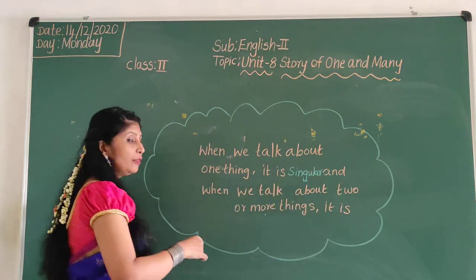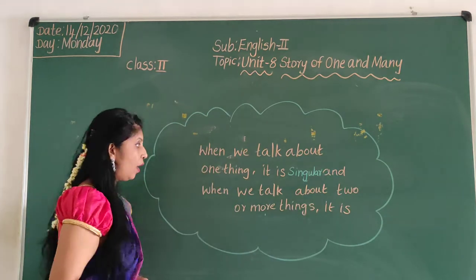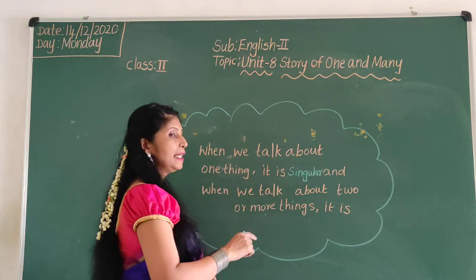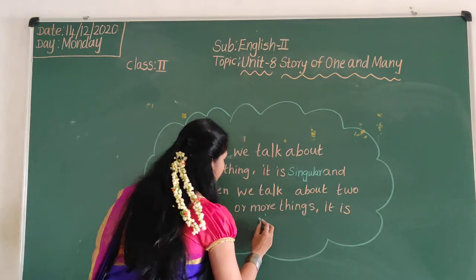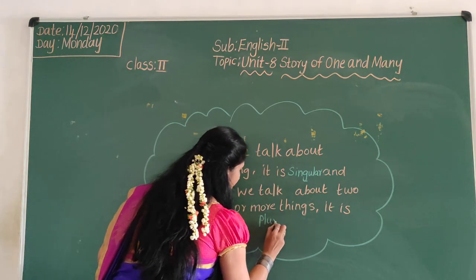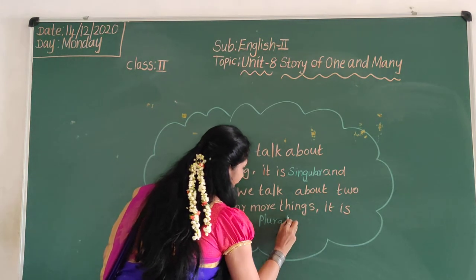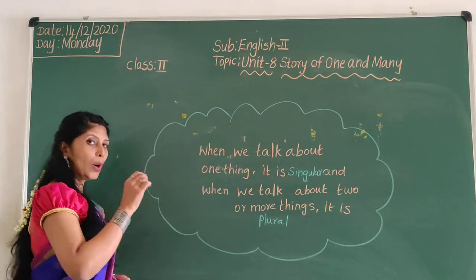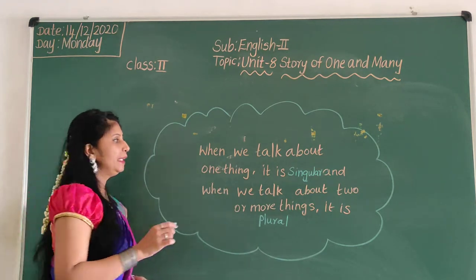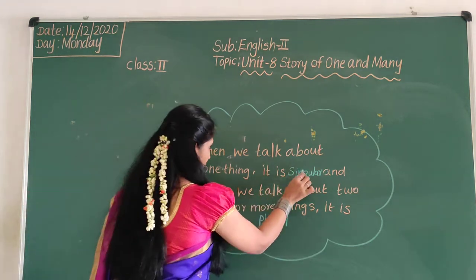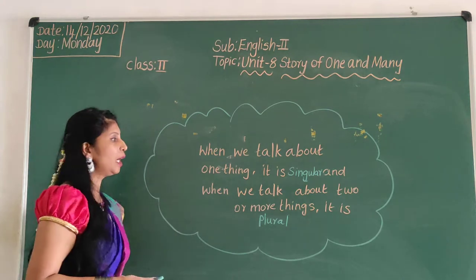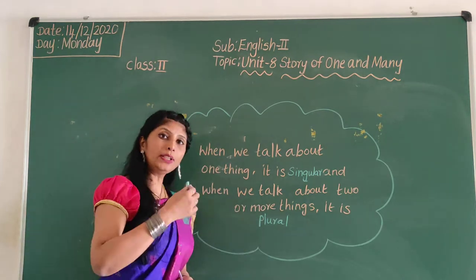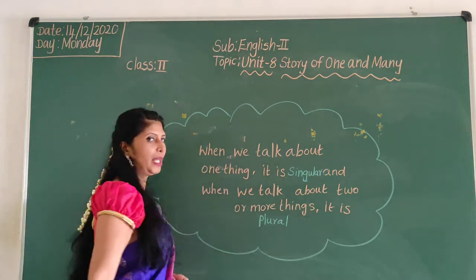Singular. And when we talk about two or more things, it is plural. P-L-U-R-A-L. When we talk about one thing, it is singular. And when we talk about two or more things, it is plural.